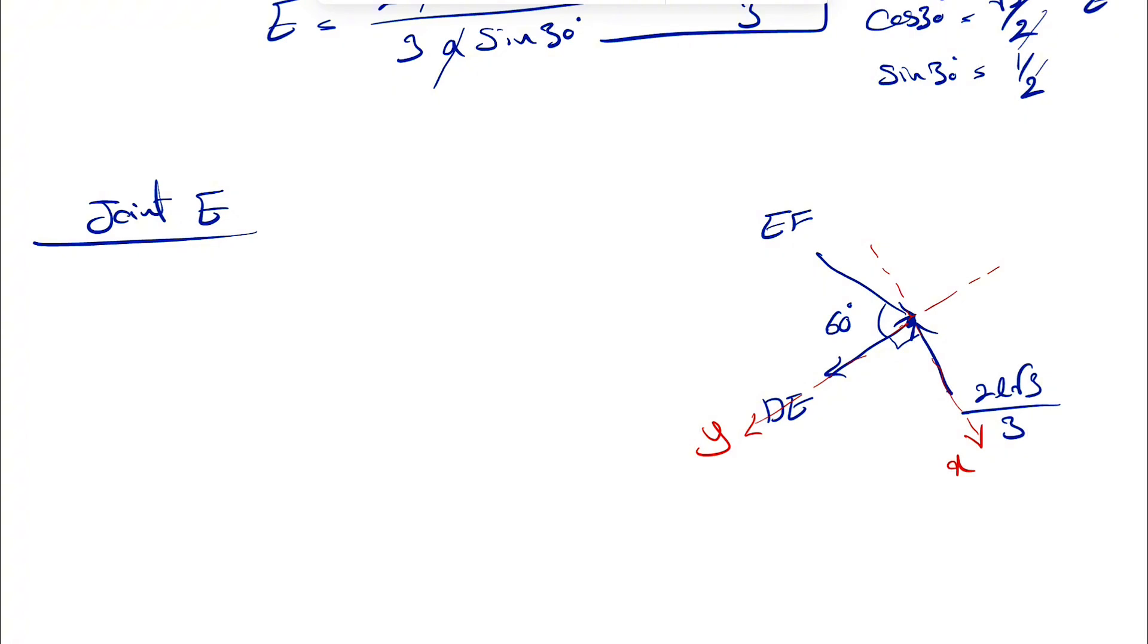The reason is that if we start with the sum of all forces in X direction, on X direction, we have the X component of EF, which would be this force, and this will be our Y. And that's going to be EF sine of 60 degrees minus 2L square root of 3 over 3 equals 0. And we can find our member EF in here.